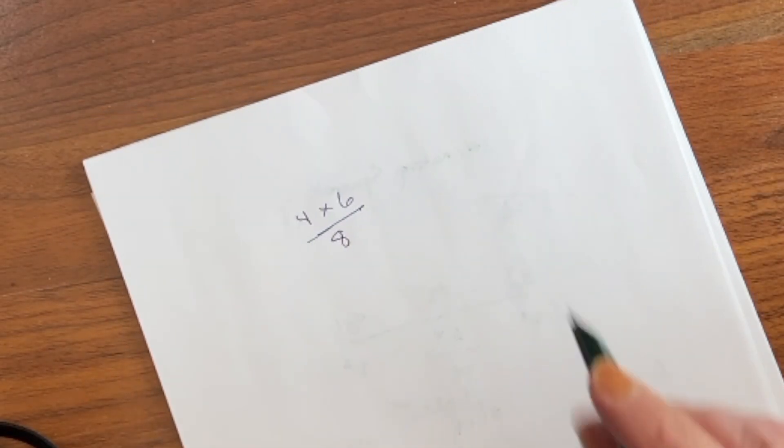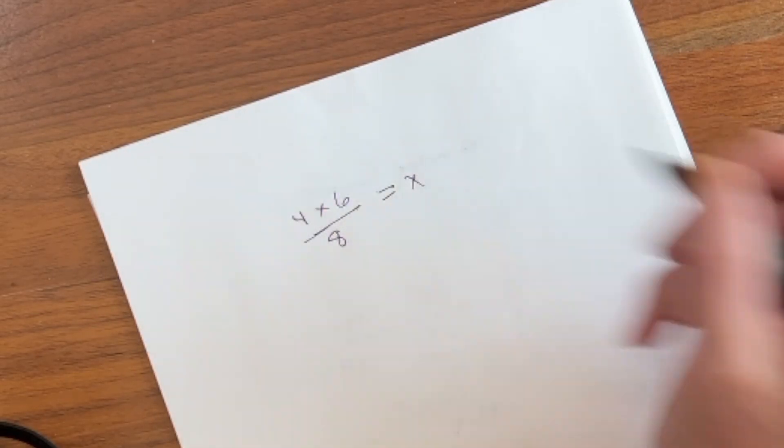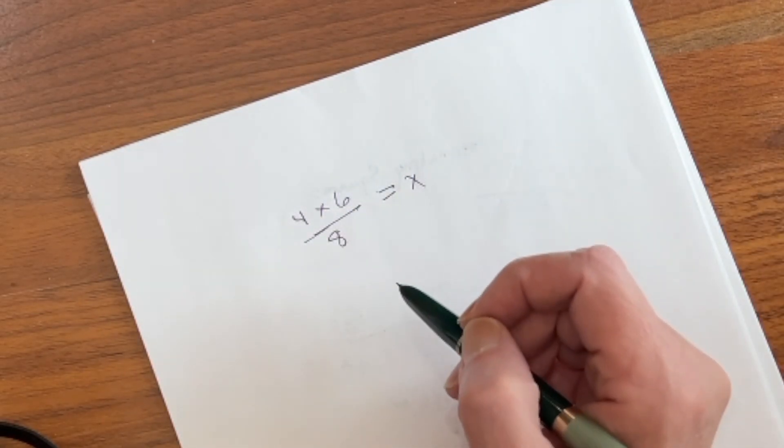Let's treat this as an algebraic equation. Let's set this equal to x. So, 4 times 6 over 8 equals x.